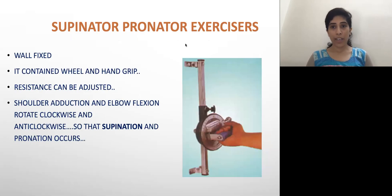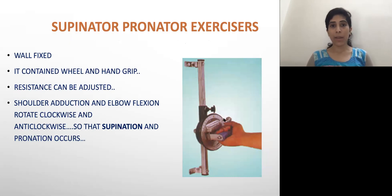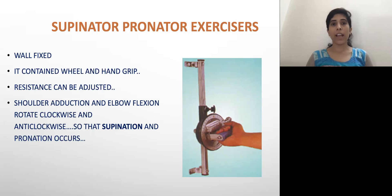Supinator and pronator exerciser. It is fitted to the wall. The patient will stand, keep the shoulder in an adducted position, and the elbow at 90 degrees, then perform supination and pronation. It contains a resistance band so the resistance can be adjusted. Ultimately, it helps to improve the range of motion as well as the strength of the supinator and pronator muscles.